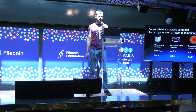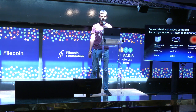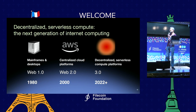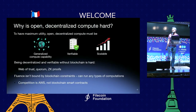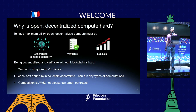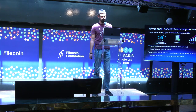All of this constitutes a new generation, a new step in the evolution of compute. We had mainframes, we had centralized cloud platforms, and now we're opening the era of decentralized compute platforms — that's happening right now. But making real open decentralized compute is hard, especially without blockchain, because we want to be both verifiable and scalable and run compute on generalized compute capacity.